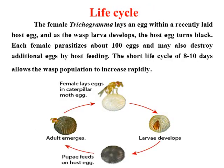This is the life cycle of the Trichogramma species. The female lays eggs within the recently laid fresh host eggs. As the wasp larvae develop, the host egg turns blackish because it secretes uric acid crystals, causing the color change. Each female parasitizes about 100 eggs in its entire life and may also destroy additional eggs by host feeding. The short life cycle of 8 to 10 days, sometimes extending to 12 or 15 days, helps increase the Trichogramma population rapidly in the field.